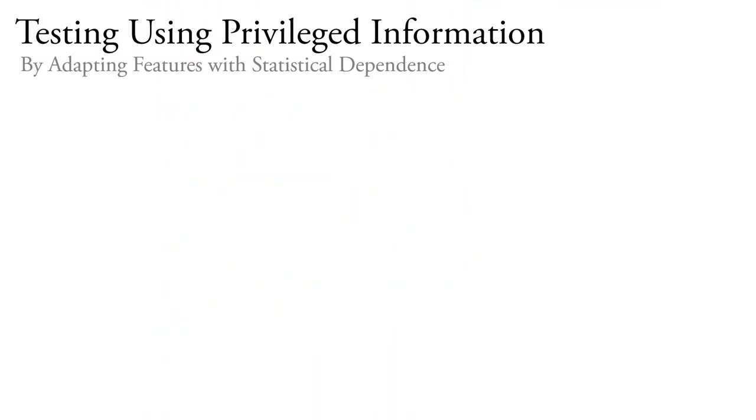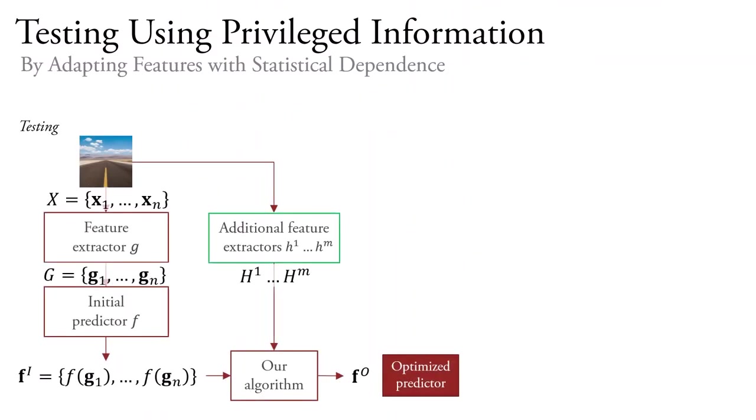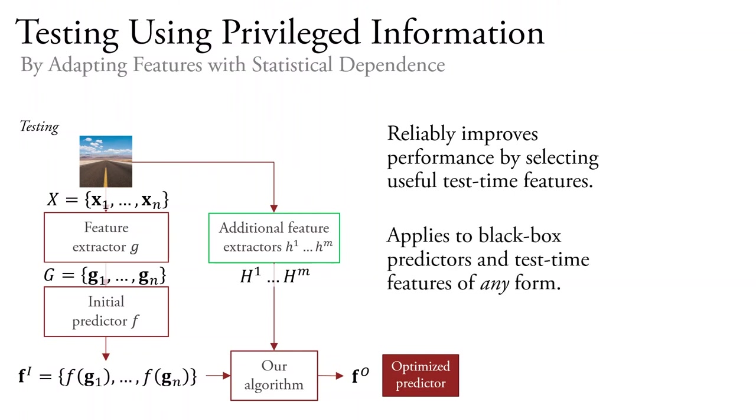So, in conclusion, testing using privileged information, or TUPI, is an interesting problem scenario. To tackle it, we propose an algorithm to adapt test time features via statistical dependence. This reliably improves performance by selecting useful test time features, unlike some examples where even retraining on a few labels decreased performance. And it applies to black box predictors and test time features of any particular form. So, it's widely applicable. So, please try it out on your problem and let us know how it does.